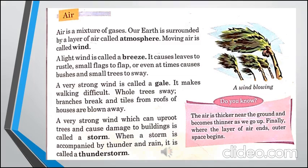پھر اگر ہم اس کو تھوڑا strong کر لیں جس کو ہم اردو میں آندھی اور انگلیش میں gale کہتے ہیں، تو اس میں بہت ساری difficulties face کرنی پڑتی ہیں۔ کچھ درخت بہت تیزی سے ہوا کے ساتھ لہرا رہے ہوتے ہیں جس کی وجہ سے heavy branches ٹوٹ جاتی ہیں، گھروں کی چھتیں اڑ جاتی ہیں اور tiles بھی اکھڑ جاتے ہیں۔ اس کو ہم آندھی کہتے ہیں۔